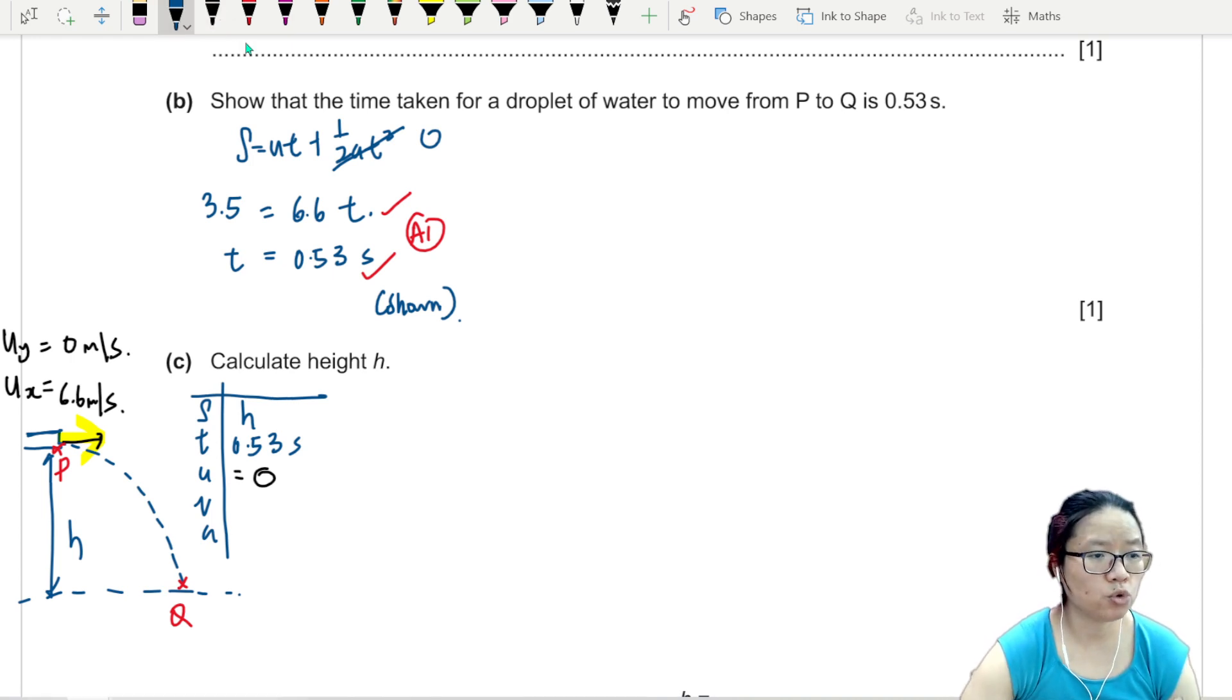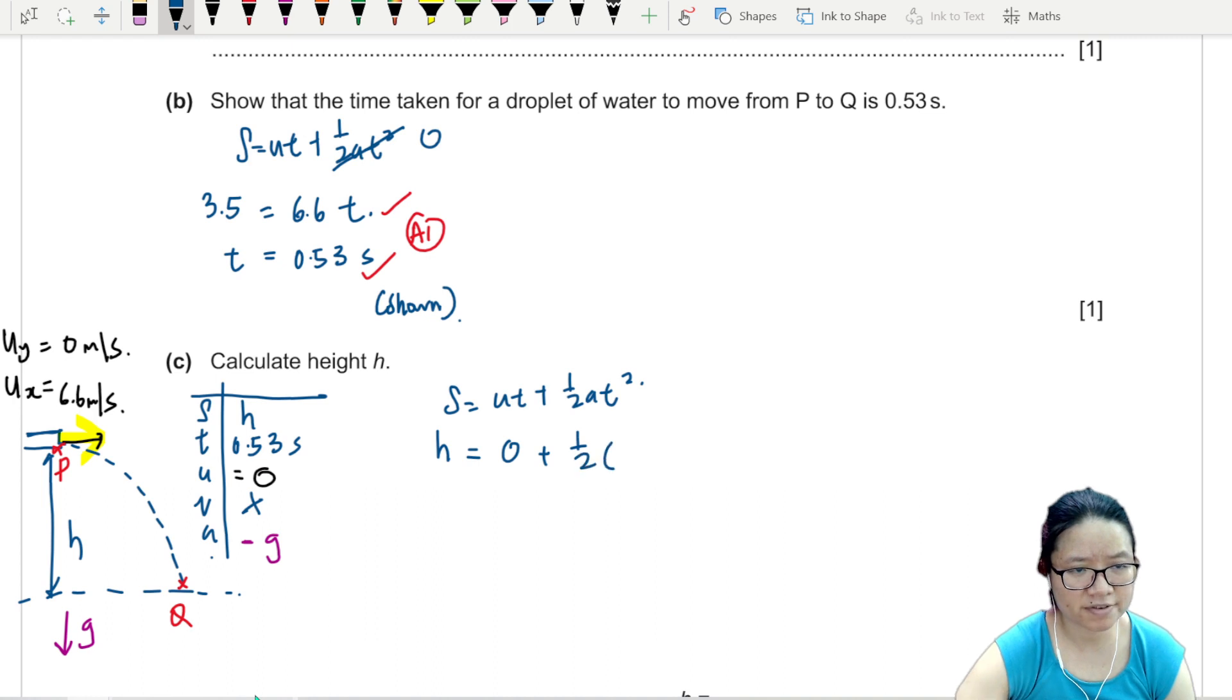V, we don't know. What is acceleration? Since the only force acting on the water droplet is weight, so the only acceleration that is going down is g. So negative g. We can find h now. Use the equation with no v. S is ut plus half at squared. h is 0 plus half negative 9.81 times 0.53 squared.